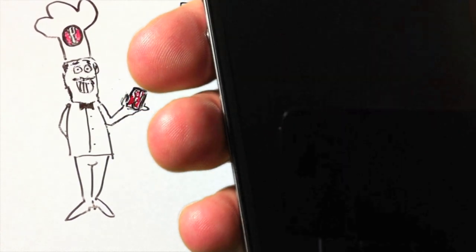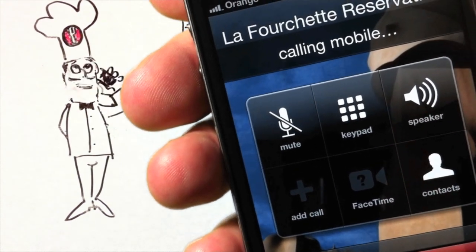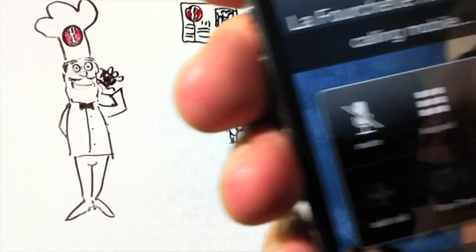The best part? I can book my table directly from the app. Hello, restaurant La Fourchette. Table for two at eight, please. Okay, thank you.